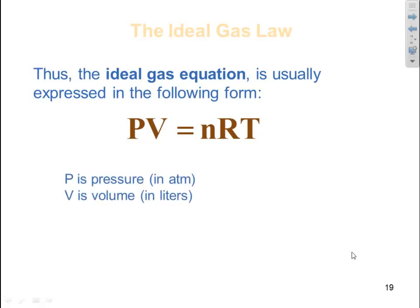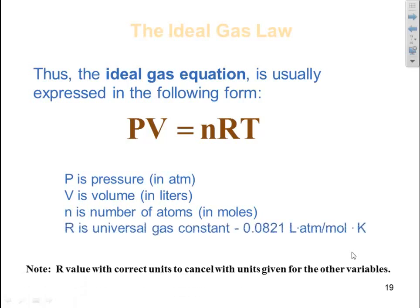Where P is typically in atmospheres, V is in liters, and the reason those are there is because we want them to cancel with our R units. N is in number of moles. R is your universal gas constant, which is 0.0821 liter atmospheres per mole Kelvin.